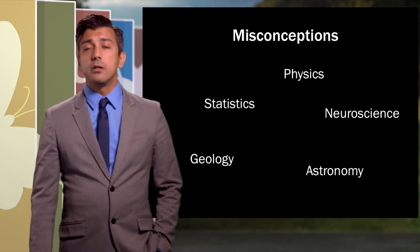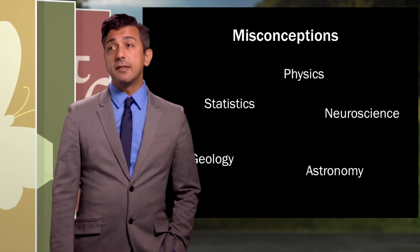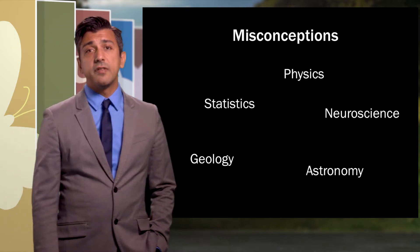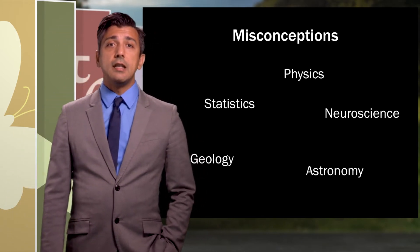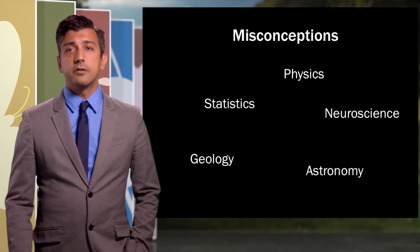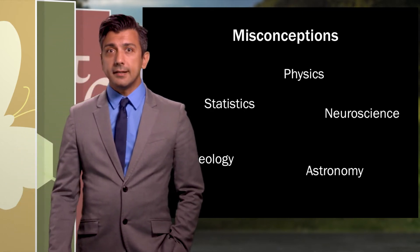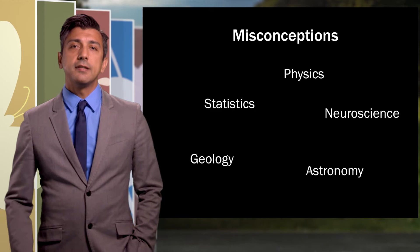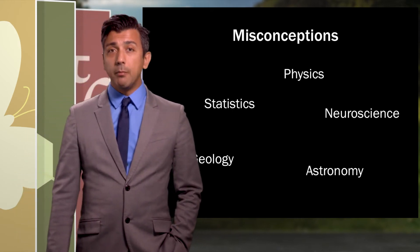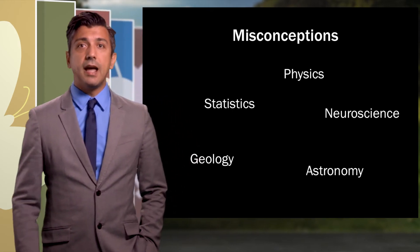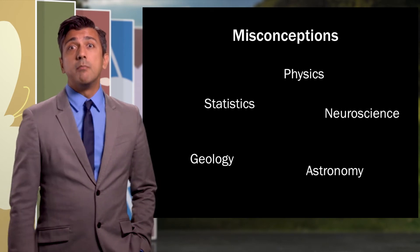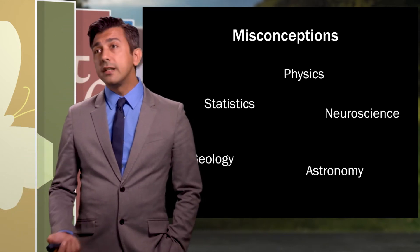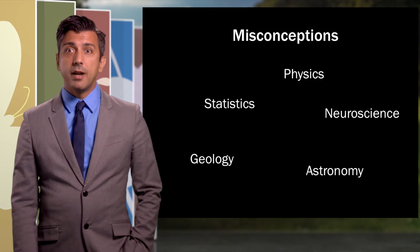We have misconceptions in astronomy, where some students believe that the seasons are caused by the elliptical orbit of the earth around the sun. We see misconceptions in geology, when some students say that they believe the earth is 6,000 years old. We see misconceptions in statistics. I see this all the time when students behave as if association implies causation. They might even be able to tell me that association does not imply causation, but then they reason as if it did.